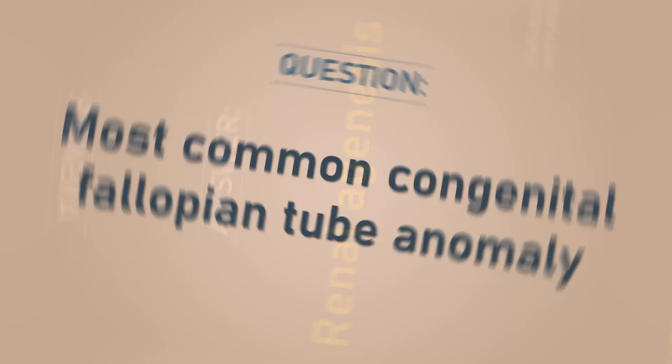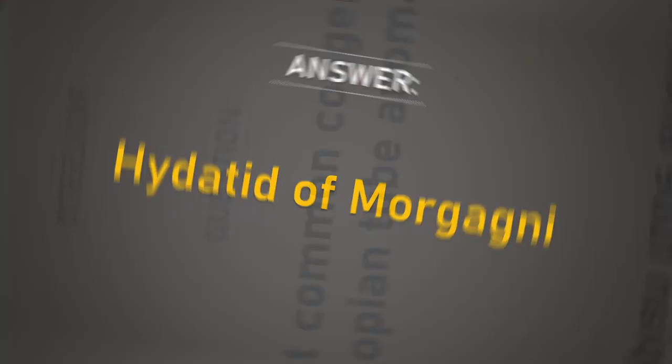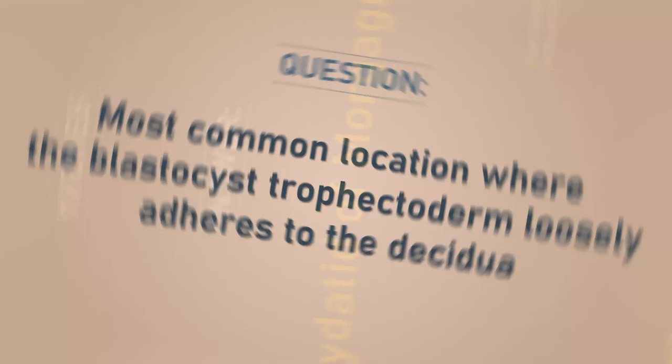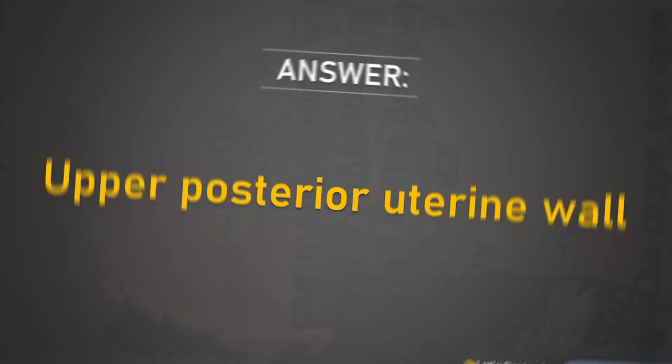Most common congenital fallopian tube anomaly: hydatid of Morgagni. Most common location where the blastocyst trophectoderm loosely adheres to the decidua: upper posterior uterine wall.